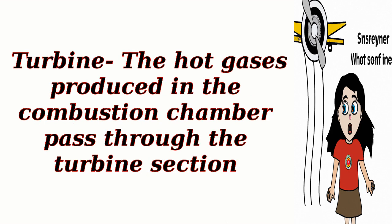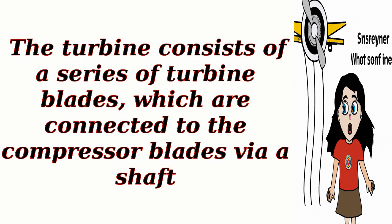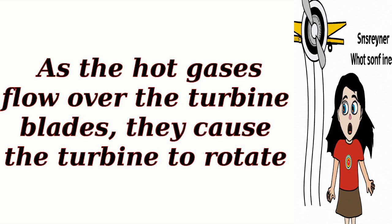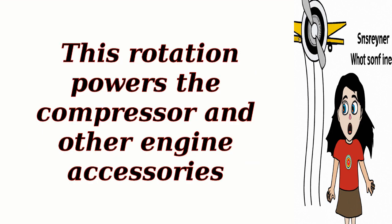Turbine: The hot gases produced in the combustion chamber pass through the turbine section. The turbine consists of a series of turbine blades, which are connected to the compressor blades via a shaft. As the hot gases flow over the turbine blades, they cause the turbine to rotate. This rotation powers the compressor and other engine accessories.